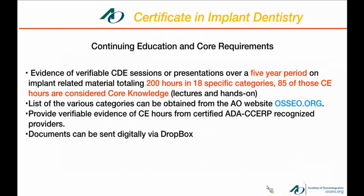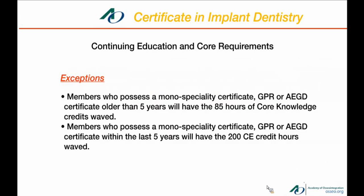A list of the various categories can be obtained from the AO website. You must be able to verify through CE certificates that you did take these courses, and this can all be sent to the academy through a Dropbox account. As of now, there are exemptions. If you have a certificate in a mono-specialty or a GPR or an AEGD that is older than five years, 85 hours of the core knowledge credits will be waived. If it is less than five years, all 200 hours of CE credits and core knowledge will be waived — though this may be subject to change.